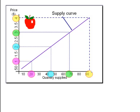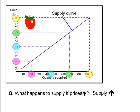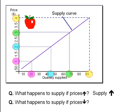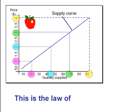Now remember what we just saw. What happens to supply if prices increase? Supply also increases — it's worth it for farmers to plant more trees and grow more apples. Farmers currently growing bananas, oranges, or other less profitable fruits will stop what they're doing and start growing apples, increasing supply further. What happens if prices drop? Supply drops. The relationship between price and the quantity supplied is called the law of supply.